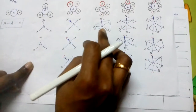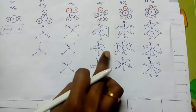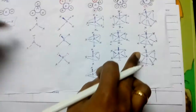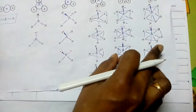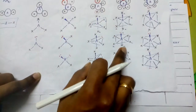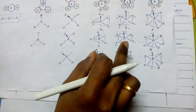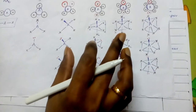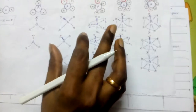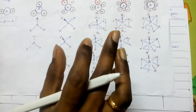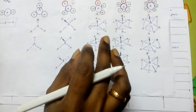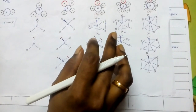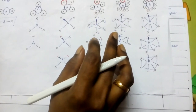One important note: in trigonal bipyramidal, lone pairs occupy the equatorial position. In octahedral and pentagonal bipyramidal, lone pairs occupy the axial position. This concept is very important for higher level exams. In the next video, I will explain with examples how to predict geometry. I hope you understood the concept. Thank you very much for your support. If you like this video, please share with your friends and subscribe.